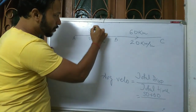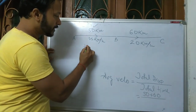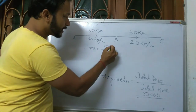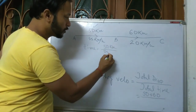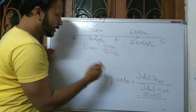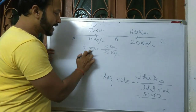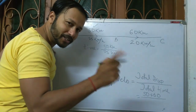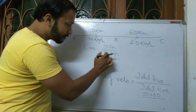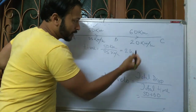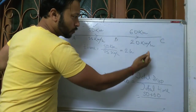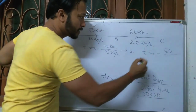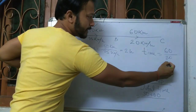For the first case, A to B: we know that time equals distance divided by speed. So time equals 50 divided by 25, which is 2 hours. Now for the second case: time equals 60 divided by 20, which is 3 hours.